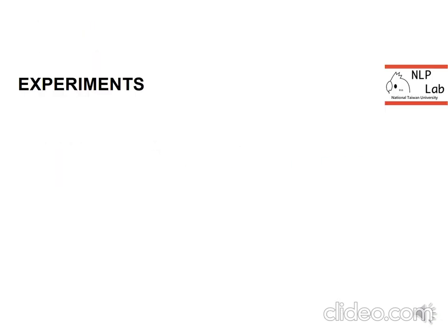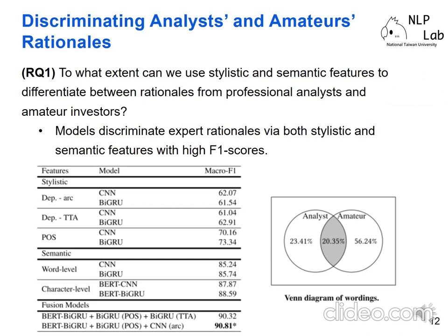Now I'm going to share the results of our experiment. This slide shows the results of discriminating analysis and amateur rationale. As you can see from this table, the fusion model using both stylistic and semantic features performs very well in this task — that shows the answer to the first research question. We also analyzed why the model performs well, and we find that the wording of professionals and the crowd are very different, which may be why the model performs well.